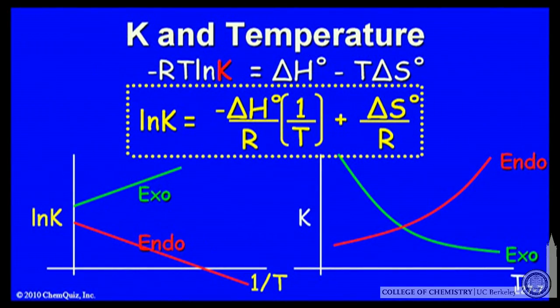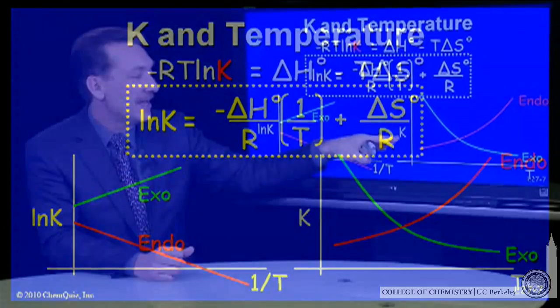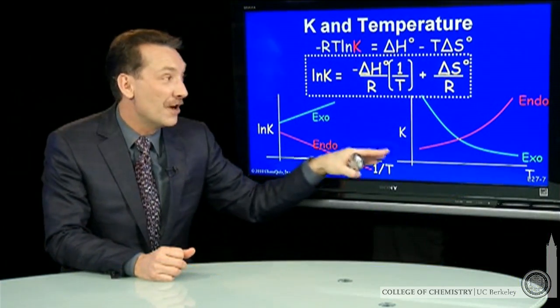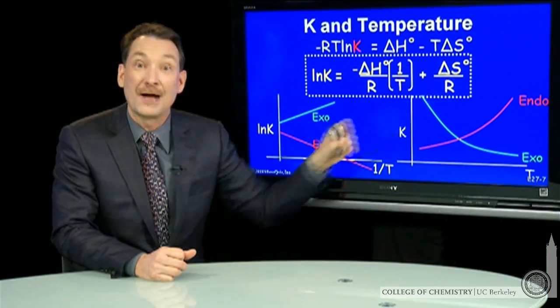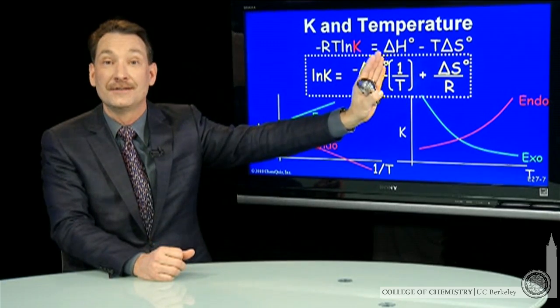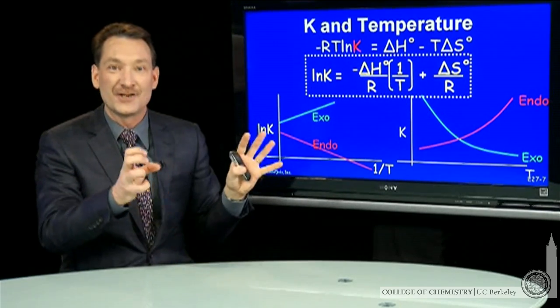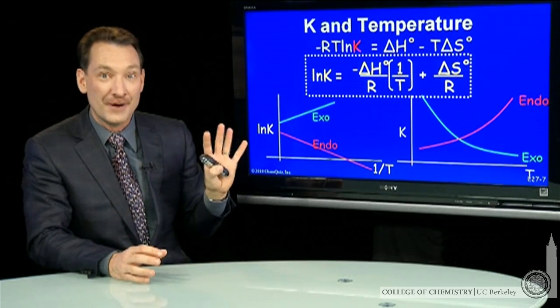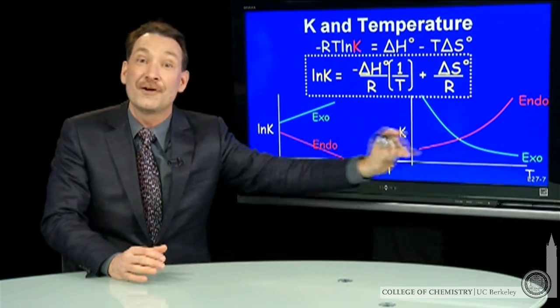I can also rationalize this with my understanding of K and T from Le Chatelier's principle. As temperature is increased for an endothermic reaction, I would start to favor products. Heat is a reactant, so if I raise the temperature, I start to favor products.